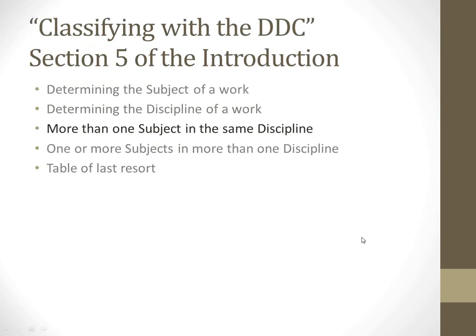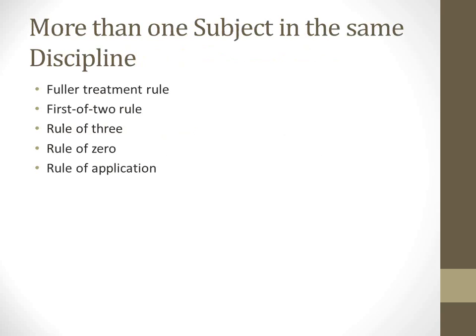Now that we've talked about determining the subject and discipline of a work, how do you handle books that have more than one subject in the same discipline? Here are a set of rules laid out in the introduction of Dewey. You take these in order: first check the fuller treatment rule, then the first of two rule, then the rule of three, then the rule of zero, and then the rule of application.